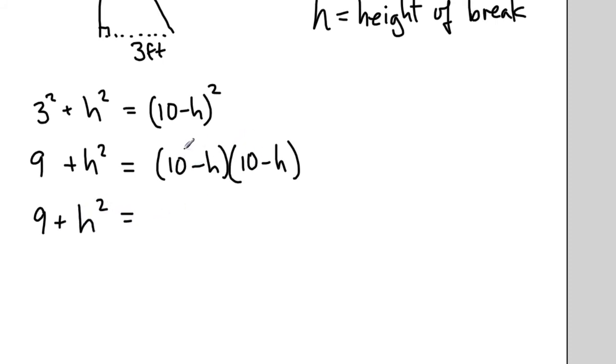So then I have 9 plus h squared. And so in order to multiply this, you're going to say 10 times 10, which is 100, and then 10 times negative h, and then here, negative h times 10, and then negative h times negative h is plus h squared. So that was FOIL, the first, the outside, the inside, and the last. That's how you multiply those two binomials.